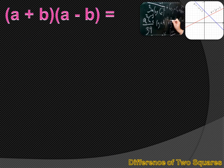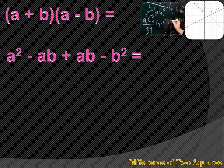Let's start by talking about factoring the difference of two squares. We're going to start from the end of this story. The end of this story is I've got two factors: a plus b times a minus b. And if I multiply those, I get a squared minus ab plus ab minus b squared. My minus ab and my plus ab cancel out, and it leaves a squared minus b squared.